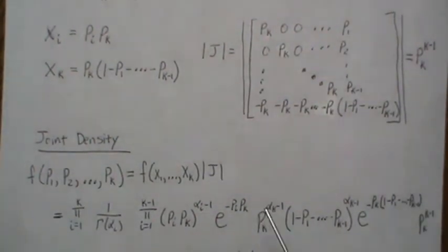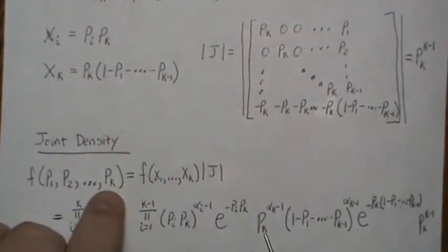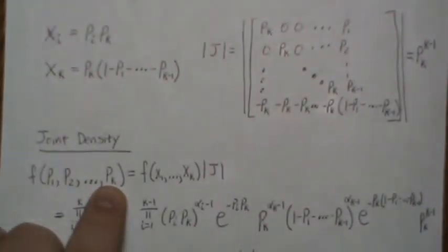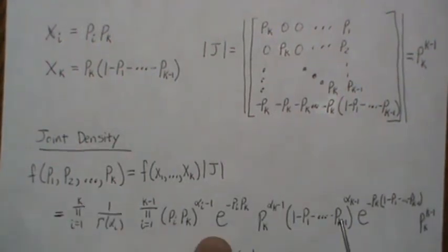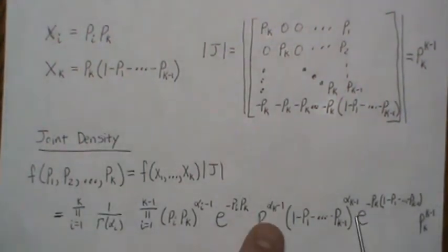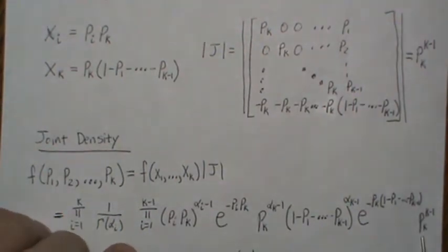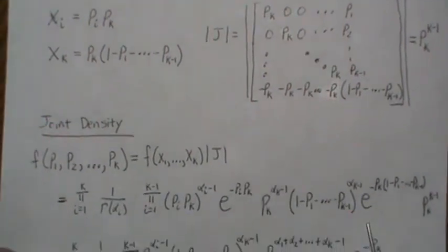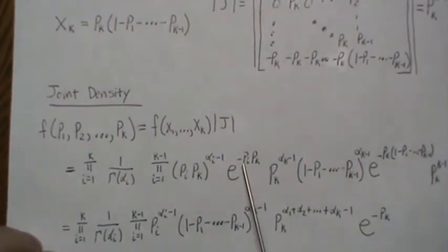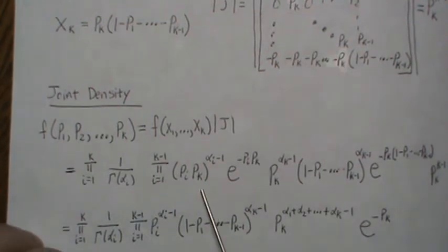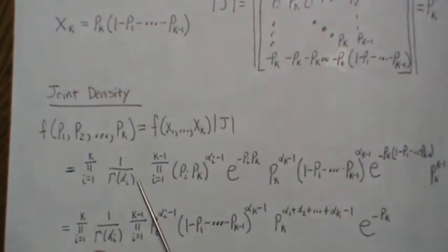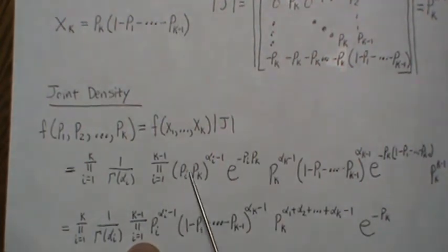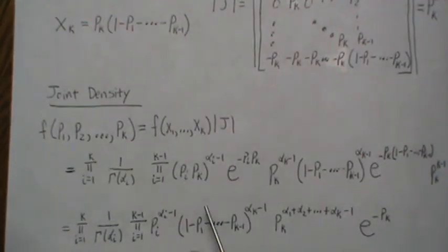And you do that for each term and the kth term is a little bit different because it's this thing, and so that's what this is and it's raised to the alpha K minus 1, and then this is the Jacobian of the transformation. And we also get e to the negative PK here. Now what I want to do is take this and anything with a PK put it to the right and anything not with a PK put it to the left so we can separate this.